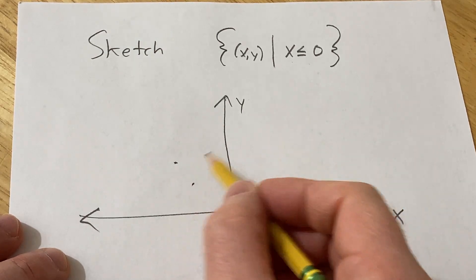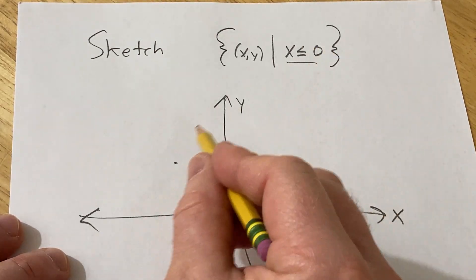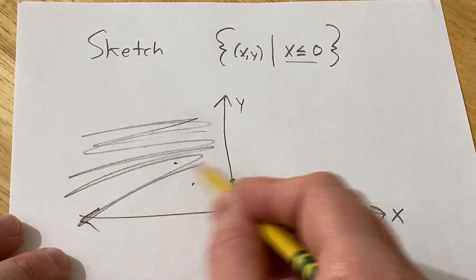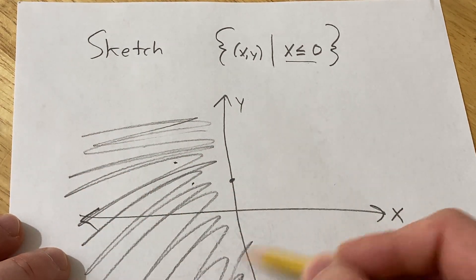So it's every ordered pair where this is true. So basically it's just all of this, all of it.